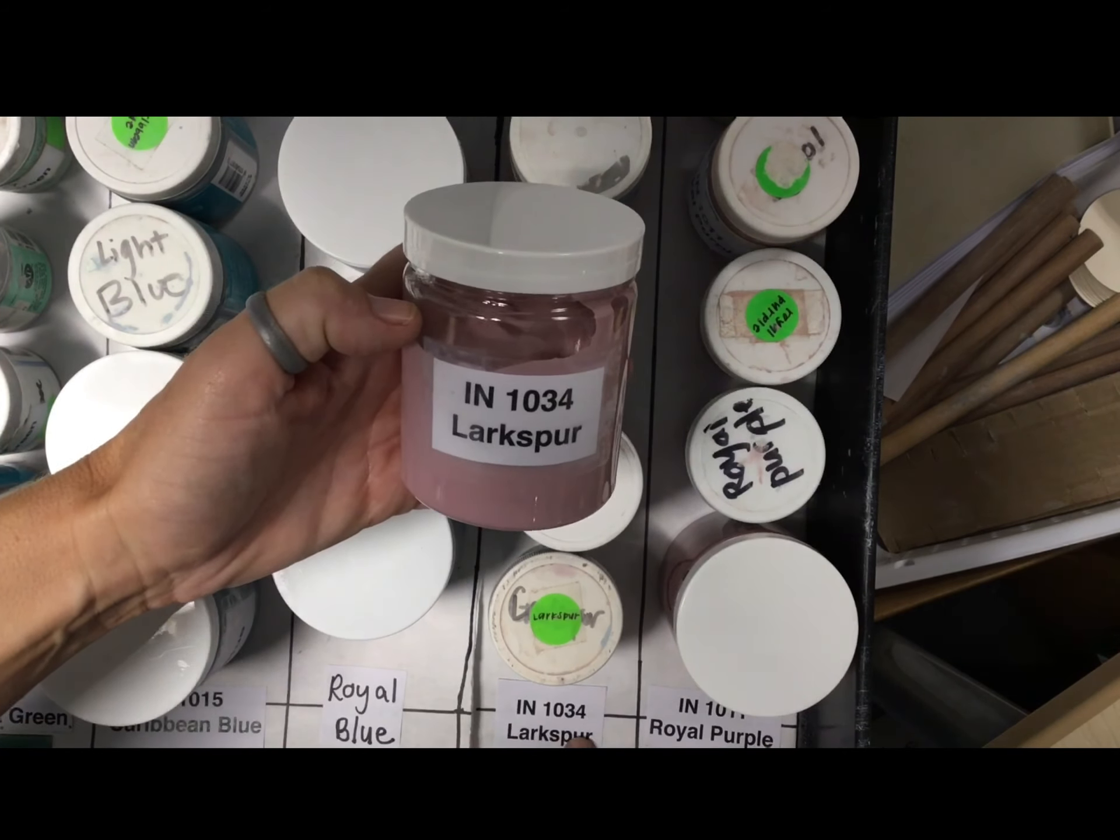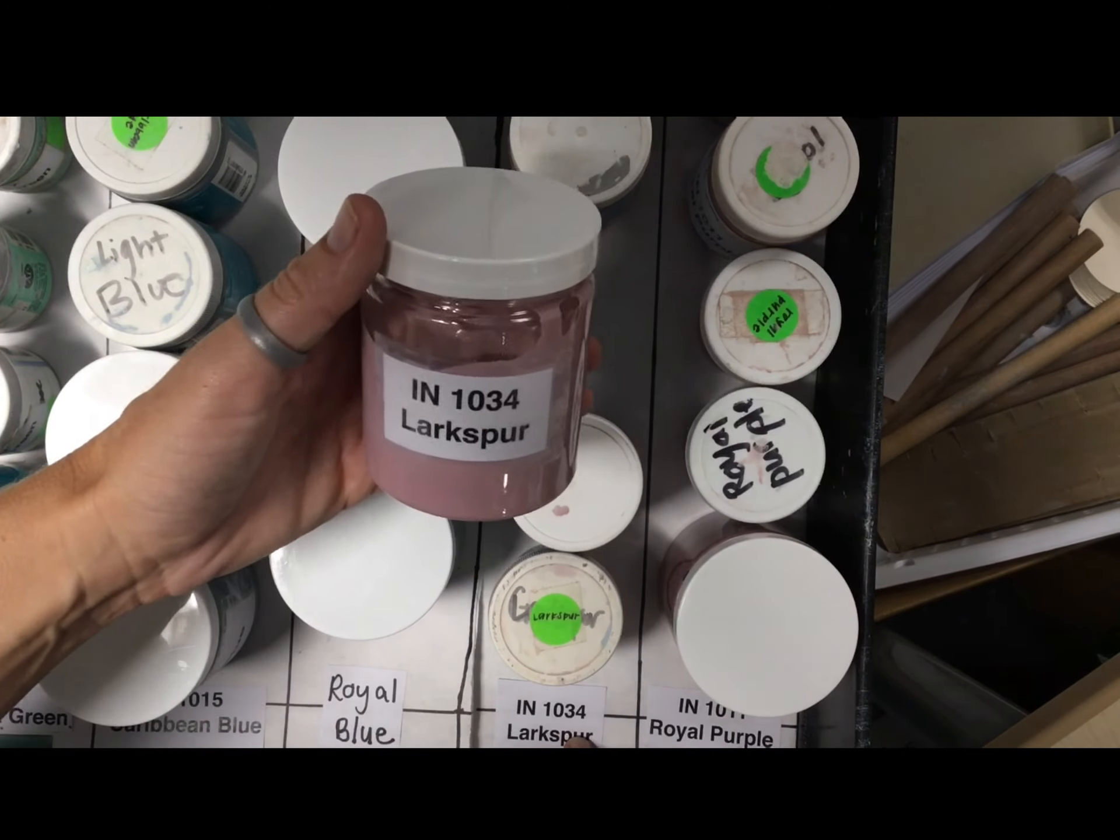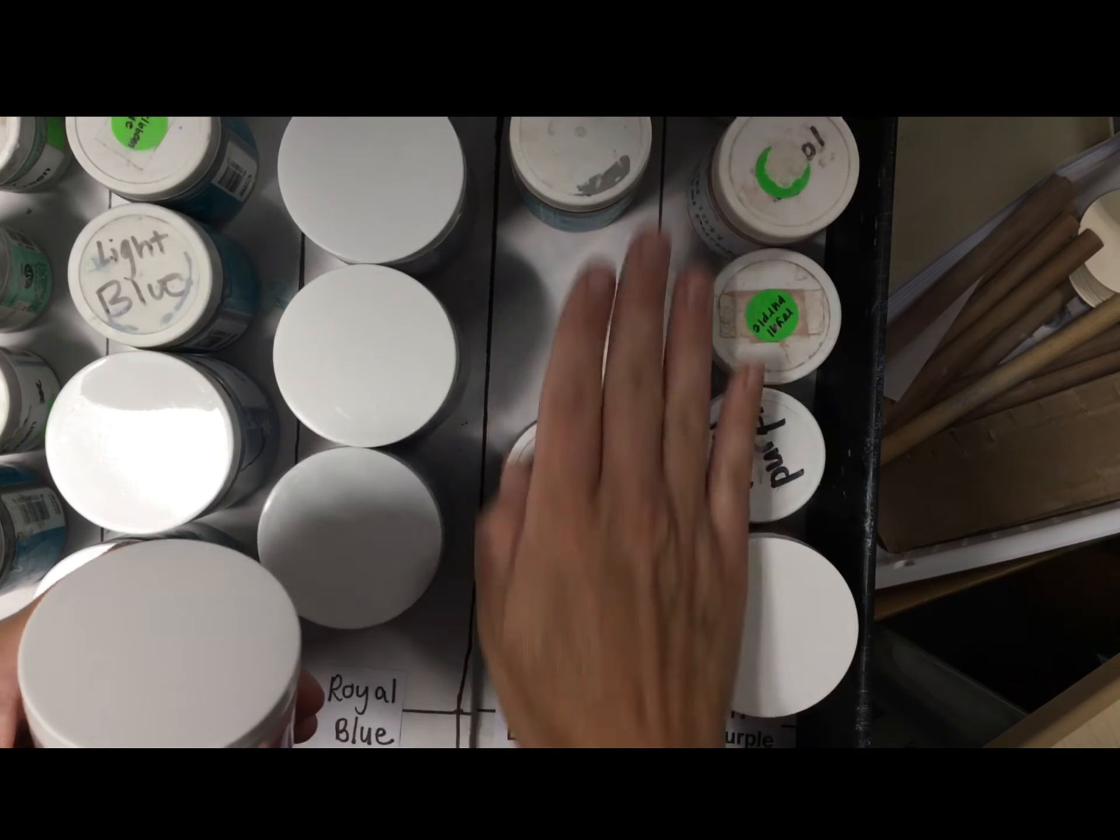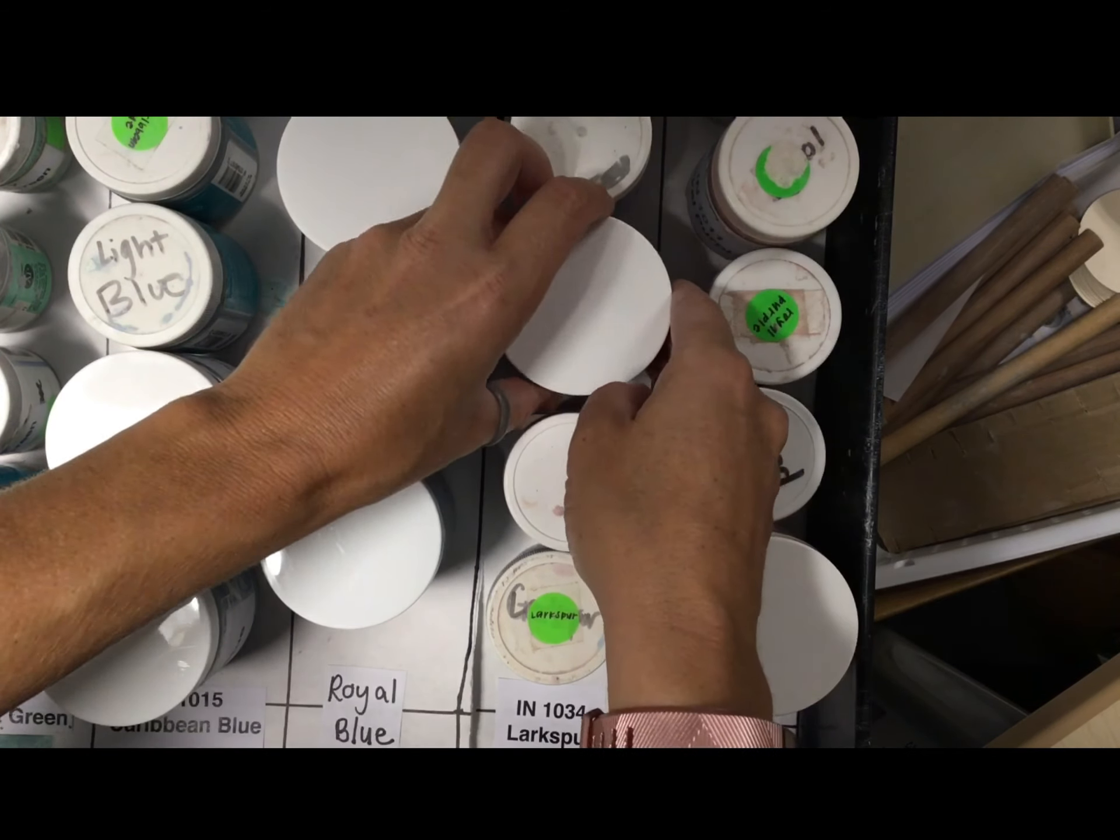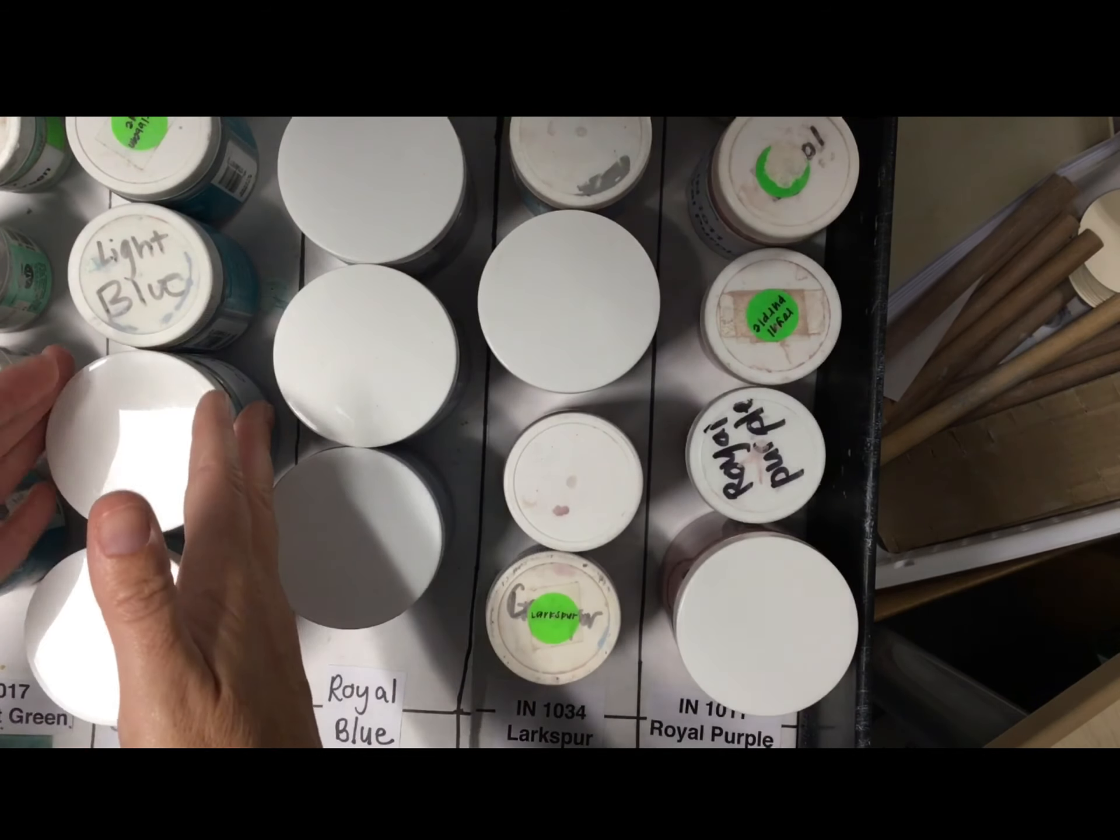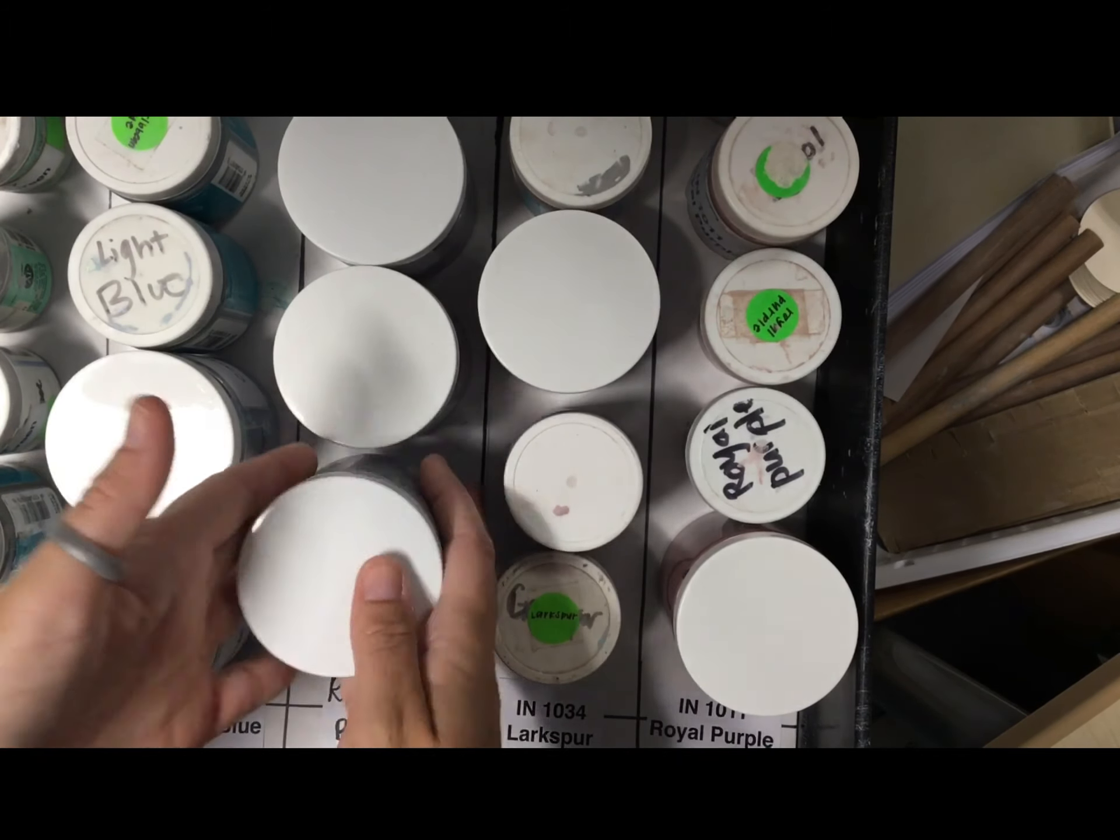When you're returning a glaze to the cart, check to make sure that the name matches the place where you're putting it. Set it down where it goes in its little column. Then you can choose a new color, making sure you always pick it up from the sides, never the top.